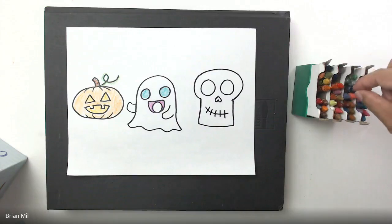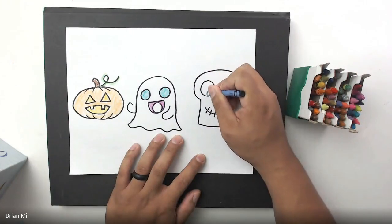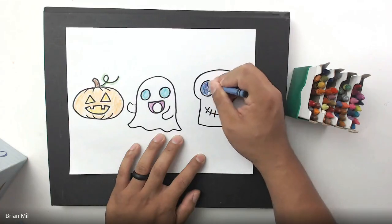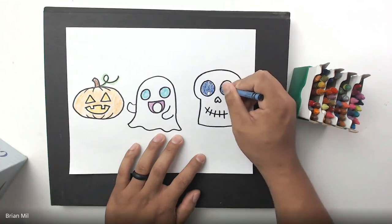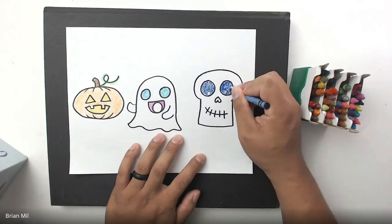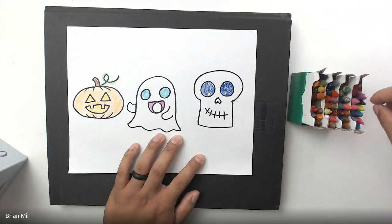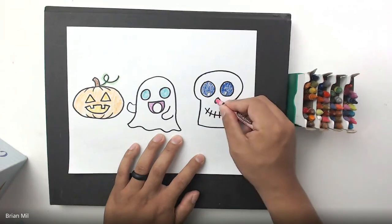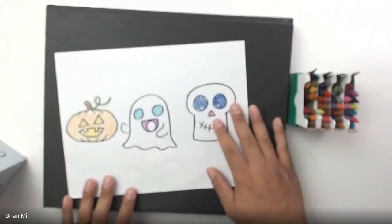I'm going to color my skull any way I want. Maybe I'll make this one a tad bit different. I'll make the eyes blue with a little bit of white in the bottom. And then I'll make the nose pink. Because I want to.